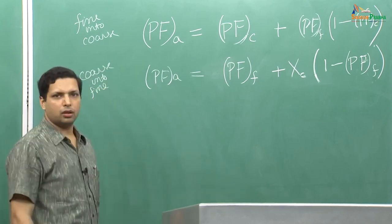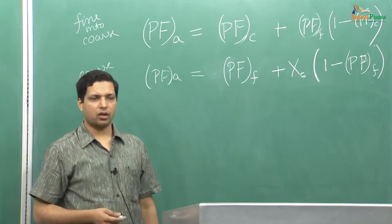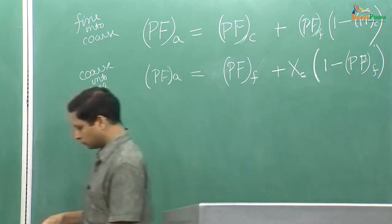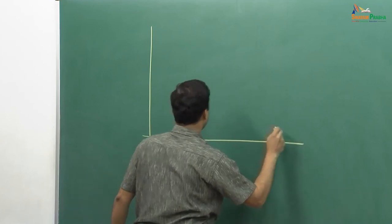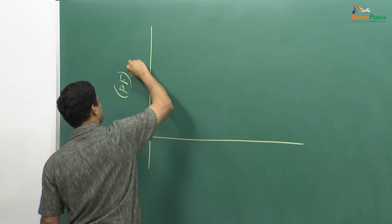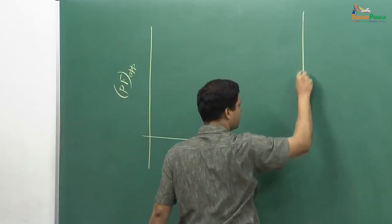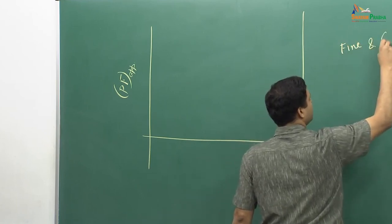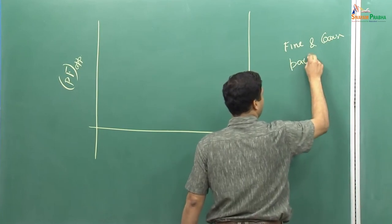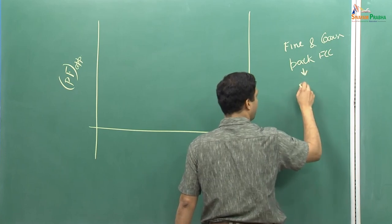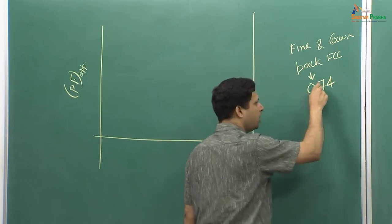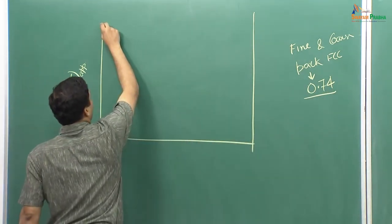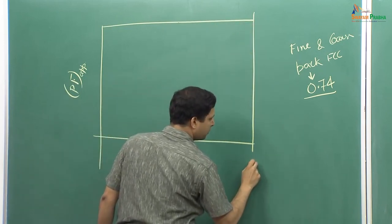Today we will see how the plot looks, where on the X axis we have fraction of coarse grains and on the Y axis we have the packing fraction. On the Y axis we have packing fraction effective or apparent. We also make the assumption that both fine and coarse pack in FCC type structure, meaning they will have 0.74 packing fraction. On the X axis we have percentage coarse particles.